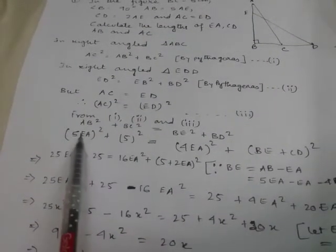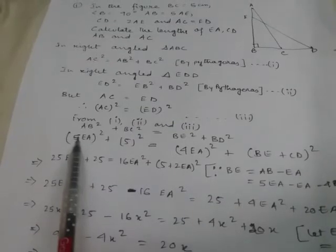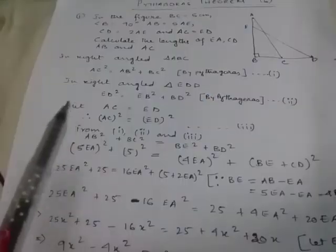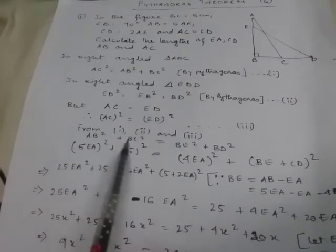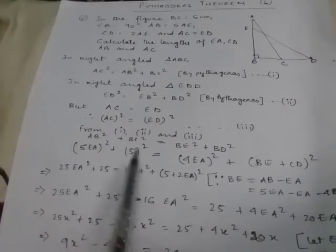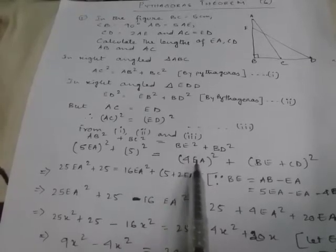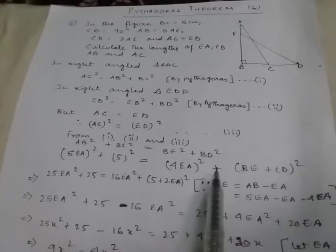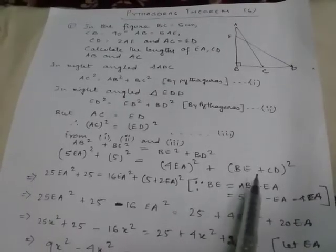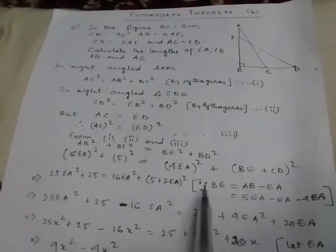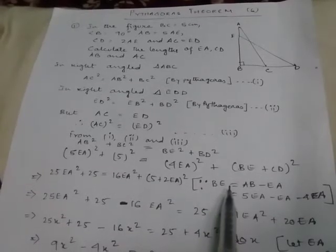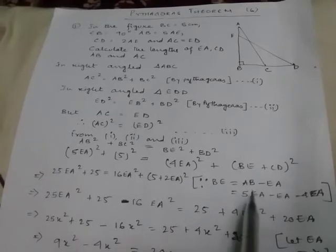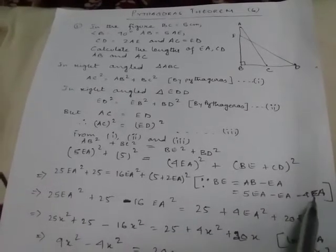So AB² I have taken as 5EA². Why? Because AB equals 5AE or EA. BC is already given as 5, that's why 5². EB equals 4EA plus BD. I have taken BE plus CD. Since BE equals AB minus EA, 5EA minus EA equals 4EA.